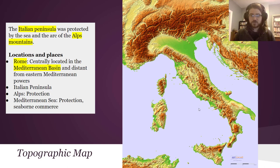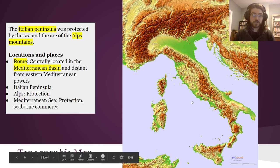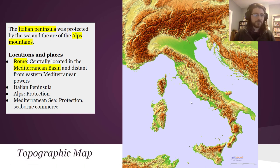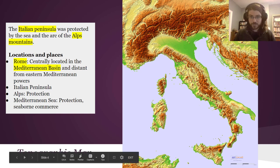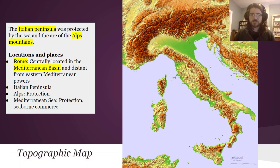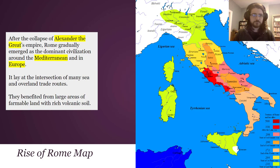Rome is also centrally located in the Italian peninsula, giving it access to both sides of the Mediterranean Sea — really useful for trade. And if you were to control the whole peninsula, you'd be able to hold off invasions because it's much harder to invade across water.